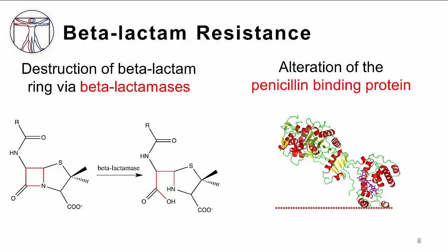Conversely, the enzyme may be acquired via plasmid transfer. A second mechanism of resistance is that the bacterium may alter the structure or composition of its penicillin binding protein, preventing the beta-lactam from binding appropriately.